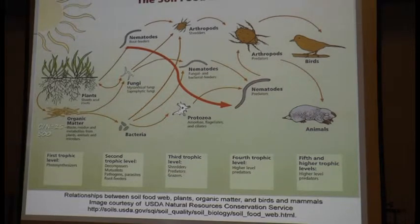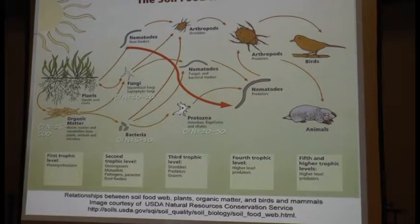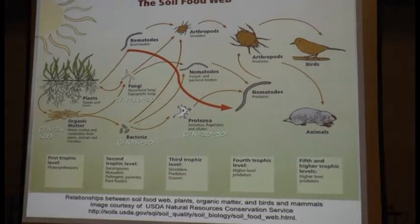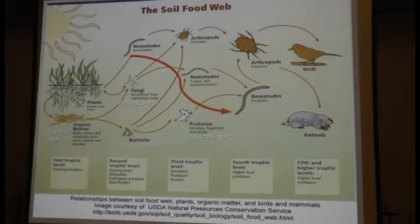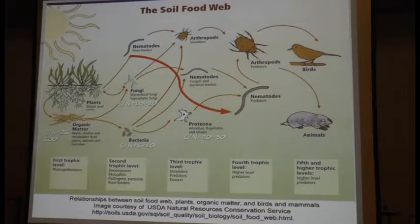The carbon-nitrogen ratio of organic matter varies widely — 25 to 500. In fungi and bacteria, the carbon-nitrogen ratio is pretty low: 5 to 10, and 10 to 20. These organisms are out there decomposing organic material. What's really important is the third trophic level — the predators, shredders, and grazers. Their carbon-nitrogen ratio is 20 to 30. For nematodes it's 50 to 100.